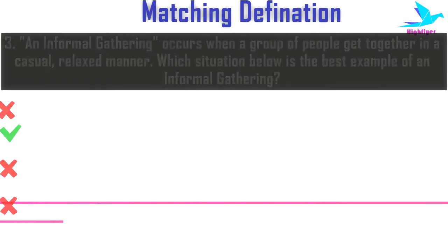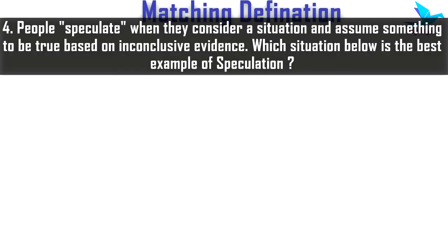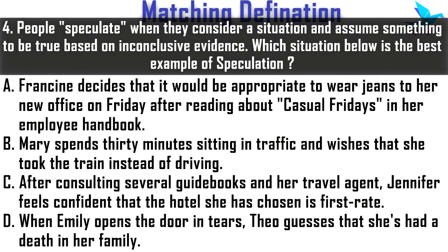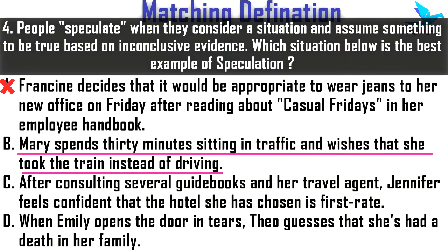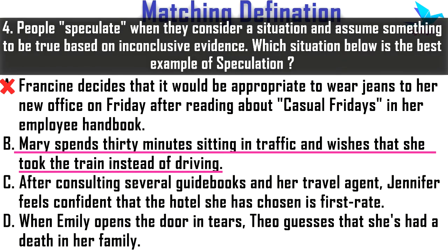Next example: People speculate when they consider a situation and assume something to be true based on inconclusive evidence. Which situation below is the best example of speculation? Option one: Francine decides that it would be appropriate to wear jeans to her new office on Friday after reading about casual Fridays in her employee handbook. This reflects assumptions made based on evidence, so it is not speculation. Option two: Mary spends 30 minutes sitting in traffic and wishes she had taken the train instead of driving.